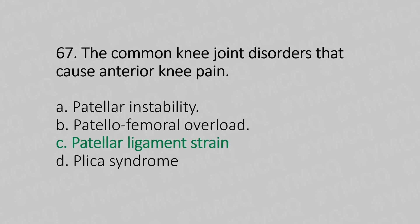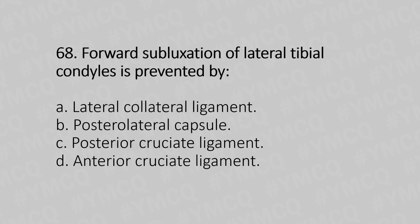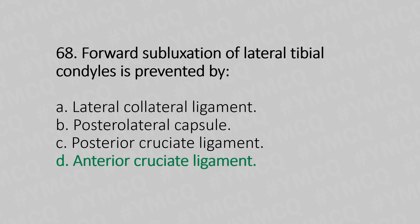Now let's move to quiz number 68. Forward subluxation of lateral tibial condyle is prevented by: Option A, Lateral collateral ligament; Option B, Posterior lateral capsule; Option C, Posterior cruciate ligament; Option D, Anterior cruciate ligament. And the answer is Option D, Anterior cruciate ligament.